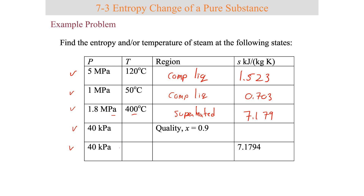For the next state at 40 kPa with a quality of 0.9, that gives a temperature of 75.9°C and an entropy value of 7.005 kJ/kg·K. For the last state at 40 kPa with entropy 7.1794 kJ/kg·K, you get a temperature of 75.9°C again, with a quality of 0.93 — a saturated mixture.